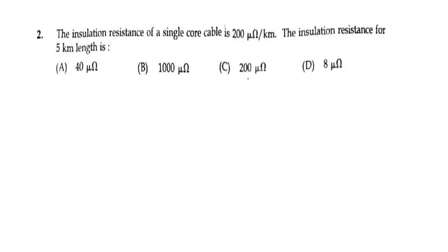Second problem: The insulation resistance of a single core cable is 200 micro-ohm per kilometer. Find the insulation resistance for 5 kilometer length. Here they have asked the insulation resistance. The normal resistance formula is R = ρL/A, but here the insulation resistance is different — the formula is R is directly proportional to 1/L.